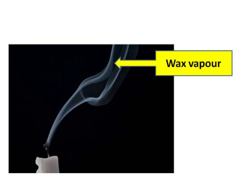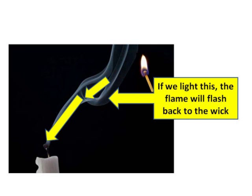After you blow out a candle, there is a little trail of smoke and gas vapor that rises upwards. You can set light to that vapor and it will burn back to the candle.